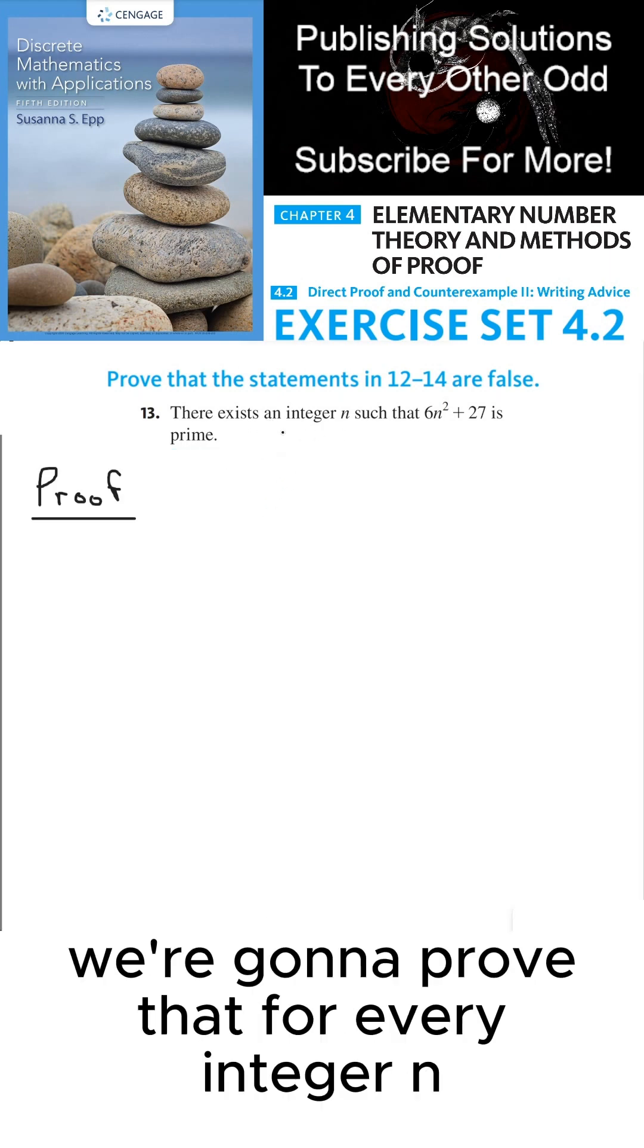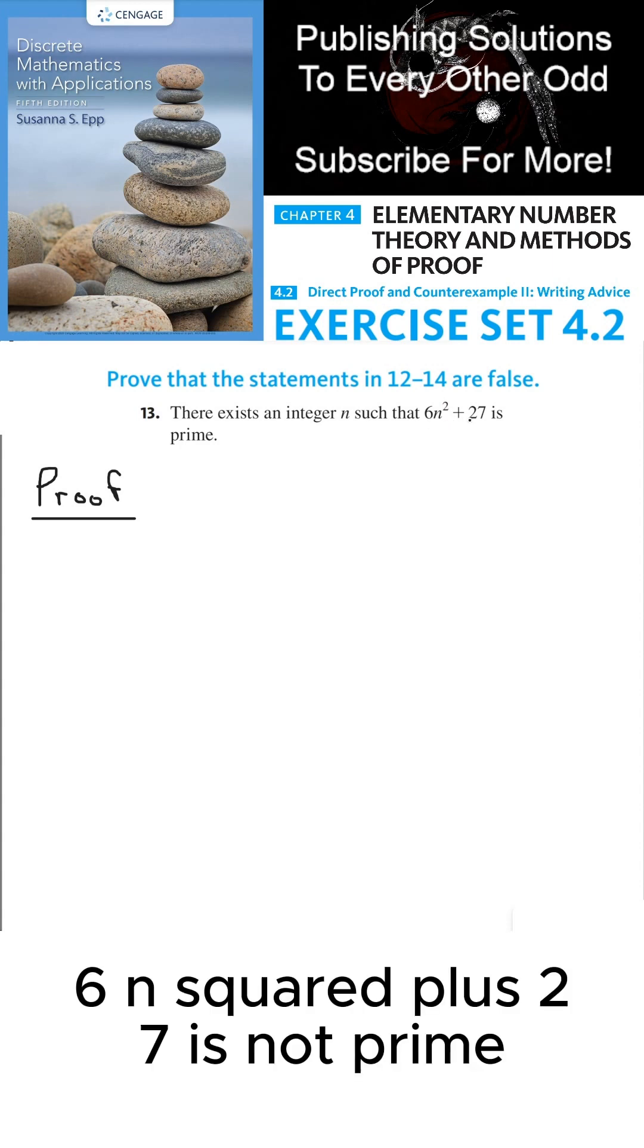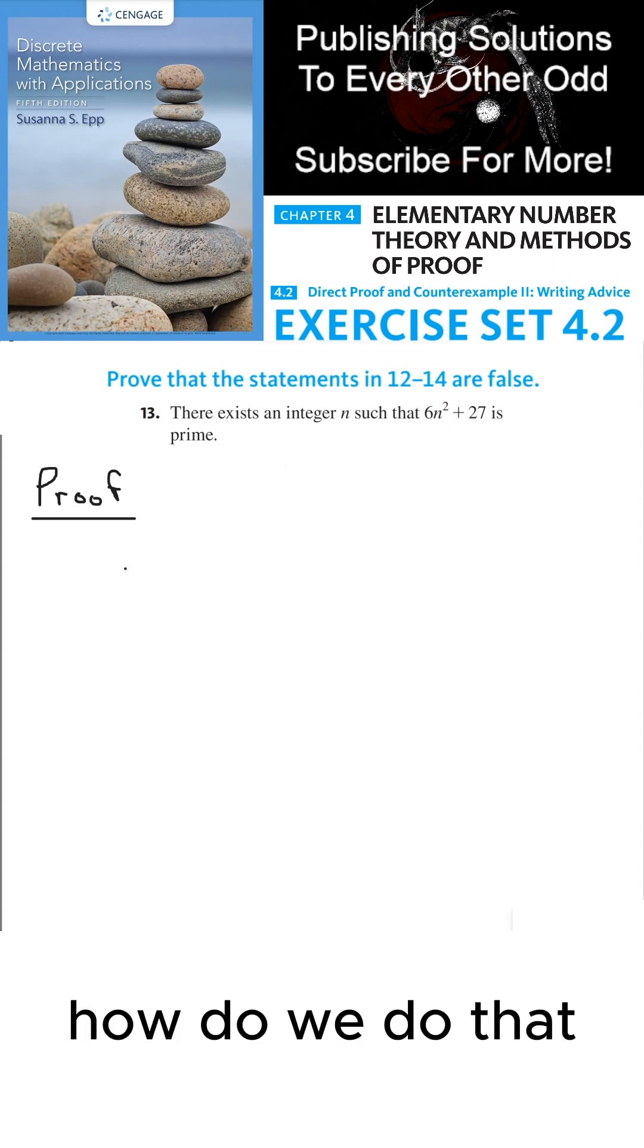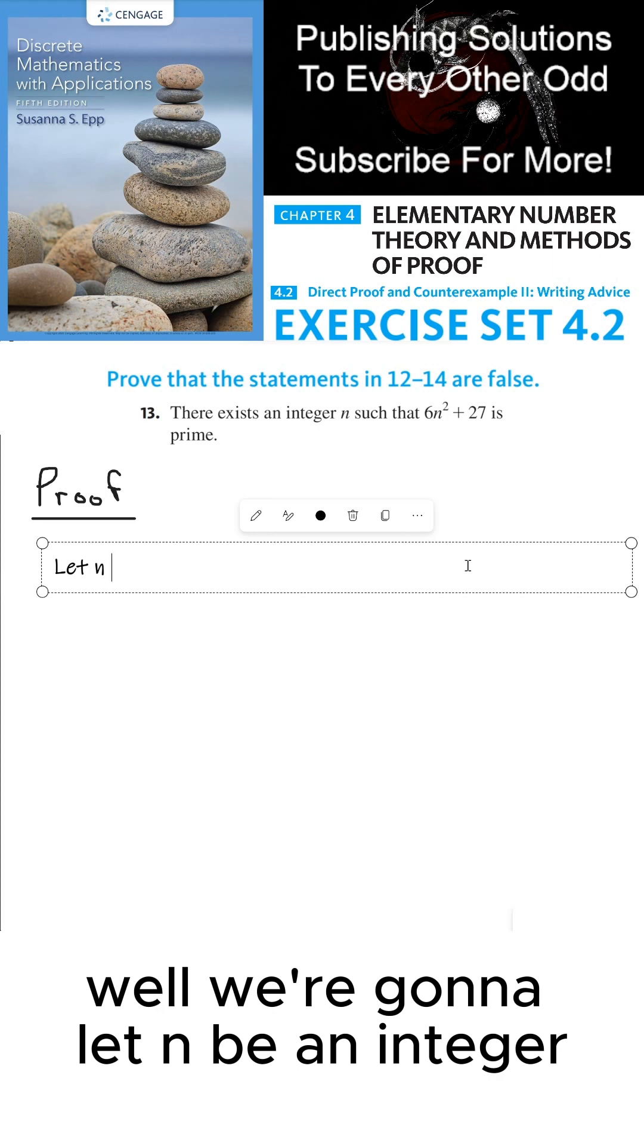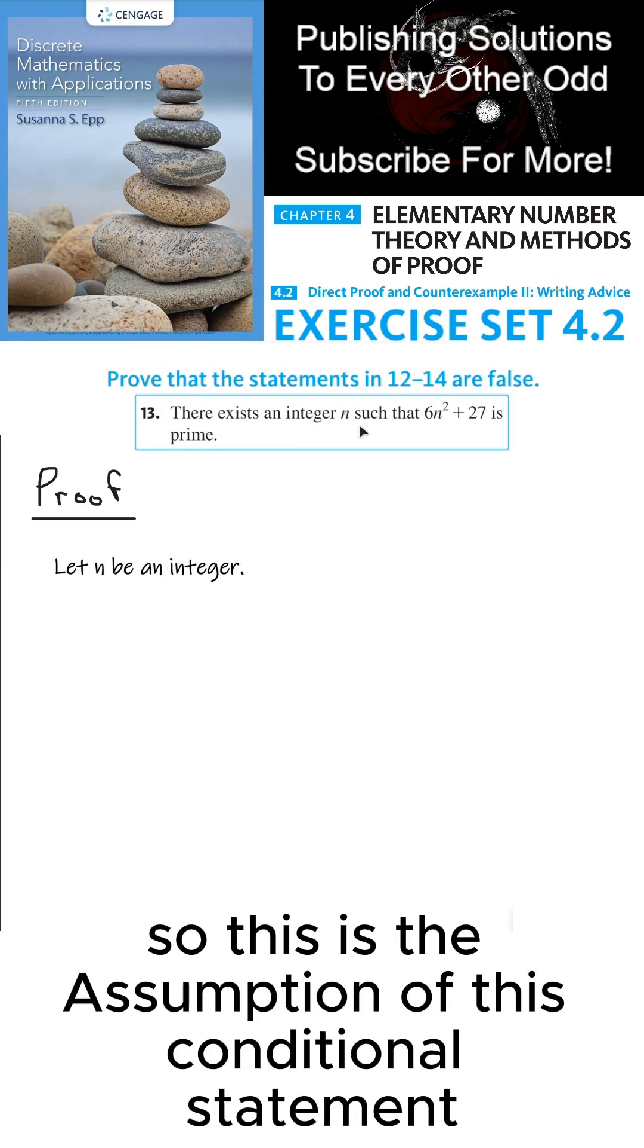So we're going to prove that for every integer n, 6n squared plus 27 is not prime. How do we do that? Well we're going to let n be an integer.